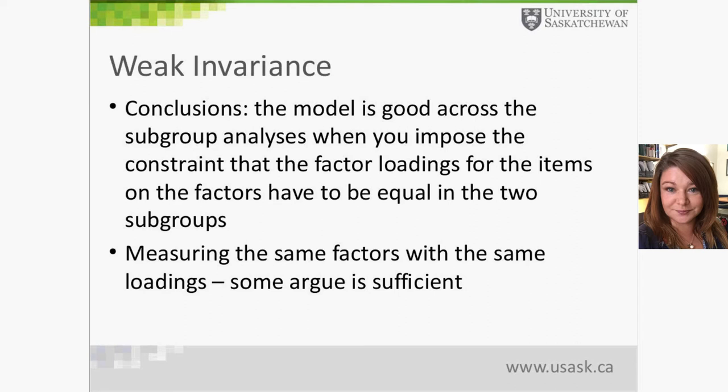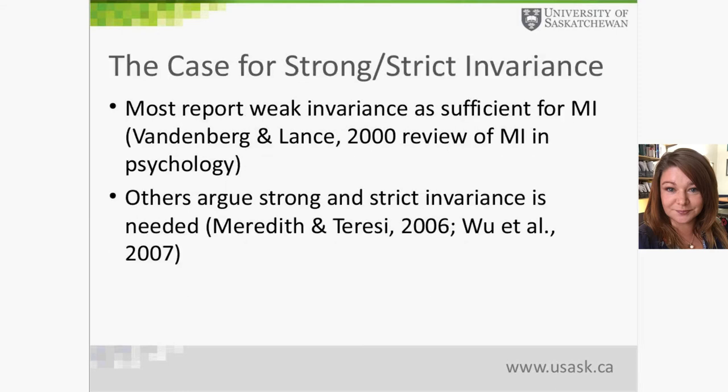Typically, weak invariance is considered sufficient evidence because one unit change on the item score is scaled to an equal unit change on the factor score across groups. The unit of measurement of the latent variable is identical across groups. Most reviews have reported weak invariance as sufficient for measurement invariance. However, others have argued that strong and strict invariance are really needed to speak to measurement invariance.